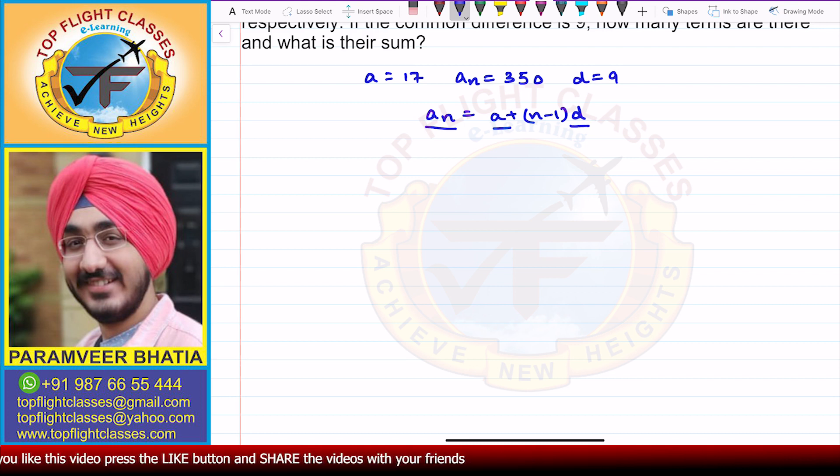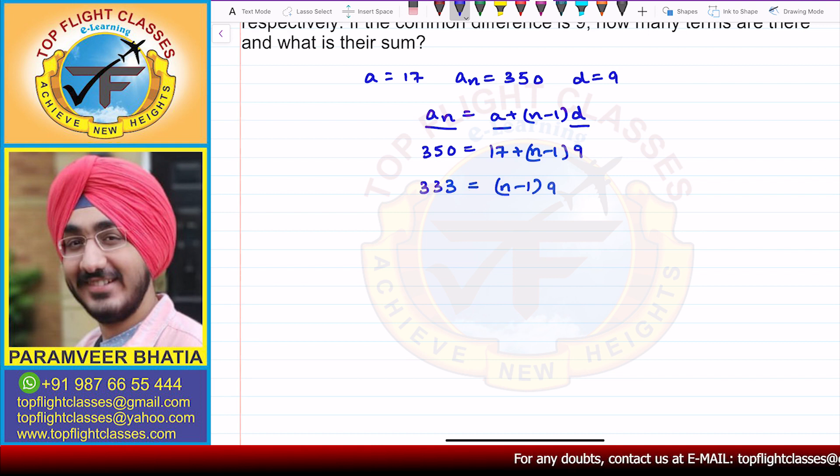So here we have 350 equals 17 plus N minus 1 times 9. So now 350 minus 17, that will be 333, is equal to N minus 1 times 9.